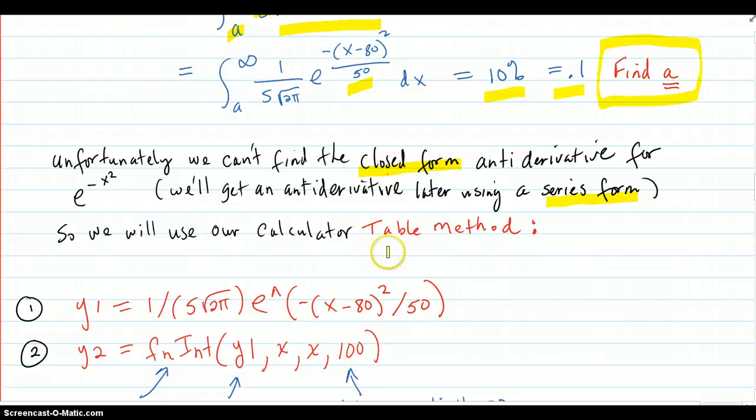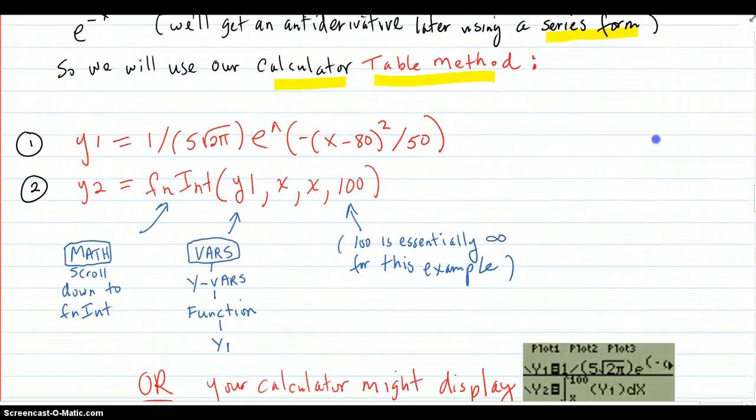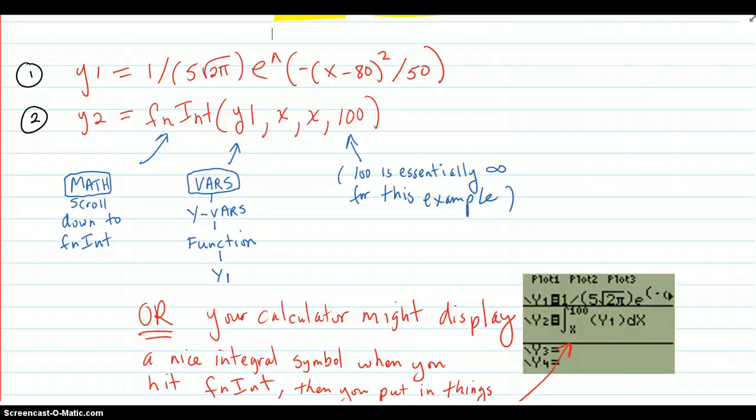But right now, we're going to do a table method in our calculator. So, first thing we're going to do is get your calculator and put in the density function with the proper 80 to 2 times sigma squared here. The sigma there, standard deviation. Put that in there. Then, in y2, put in function integral with this syntax here with the commas. Now, how are you going to do that? To get the function integral, you're going to go to the math key. Scroll down to the function integral and press enter. And it's going to put that there.